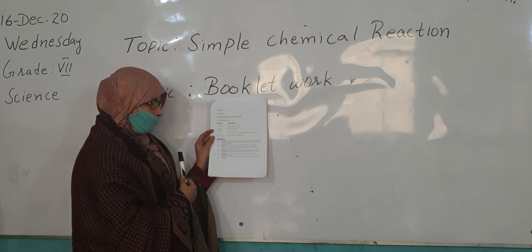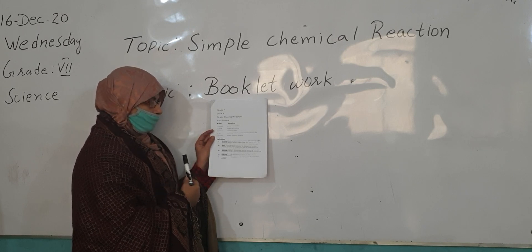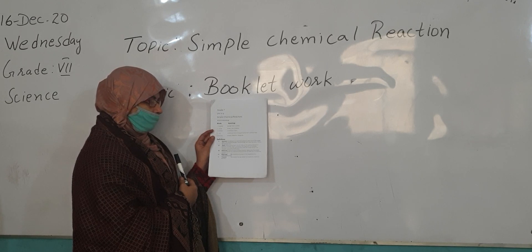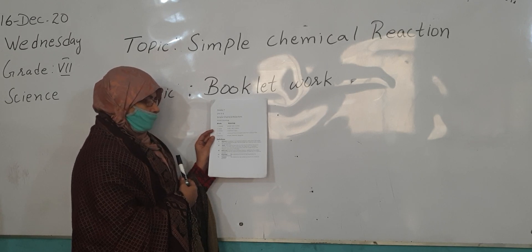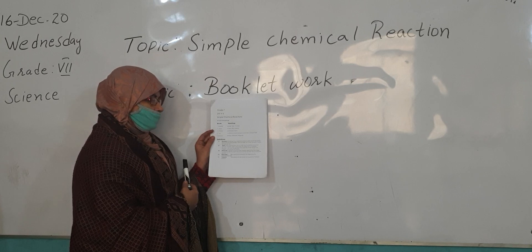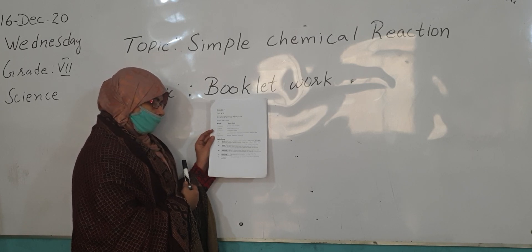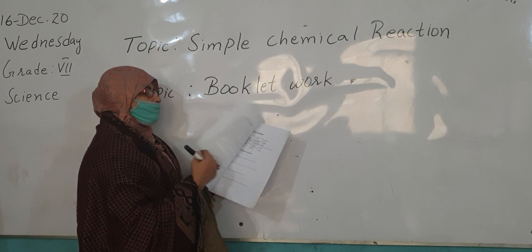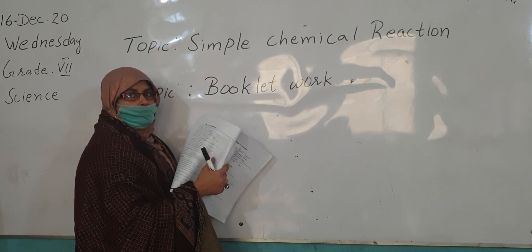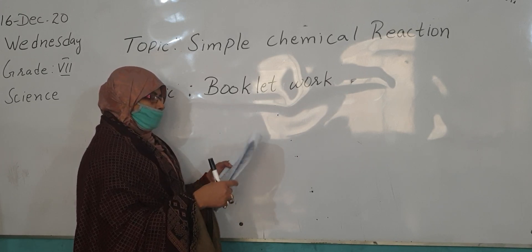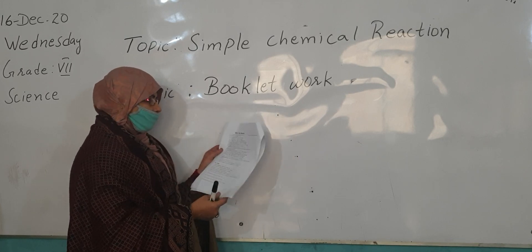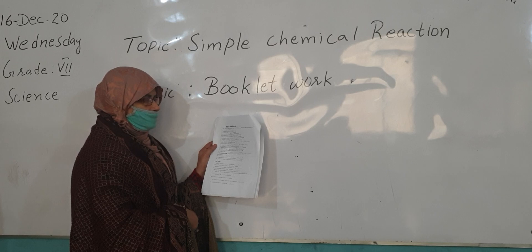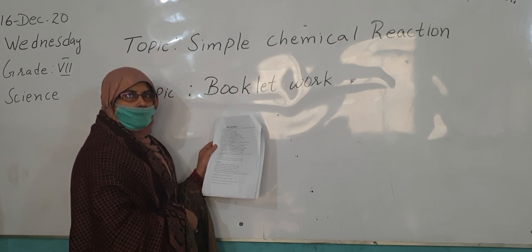Molecule: a group of atoms bonded together, representing the smallest fundamental unit of a chemical compound that can take part in a chemical reaction. Reactant: the substance involved at the beginning of a chemical reaction. Product: the substance we receive at the end of a chemical reaction. An atom is the smallest part of an element that can exist and take part in a chemical reaction.